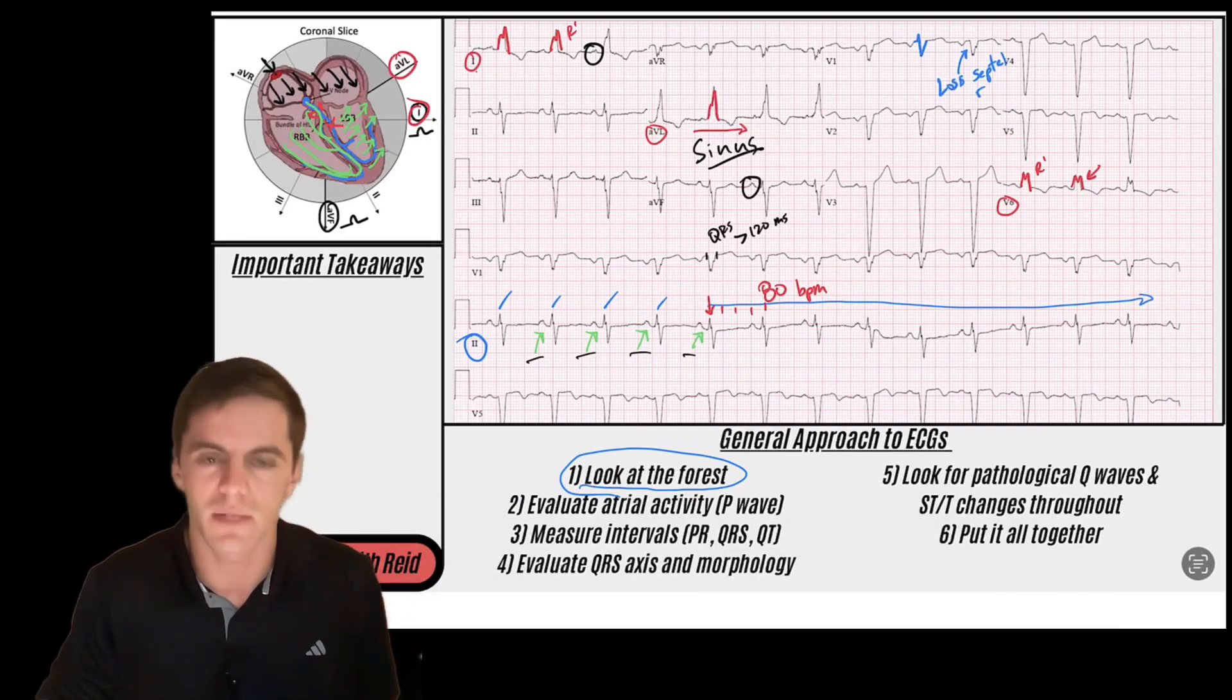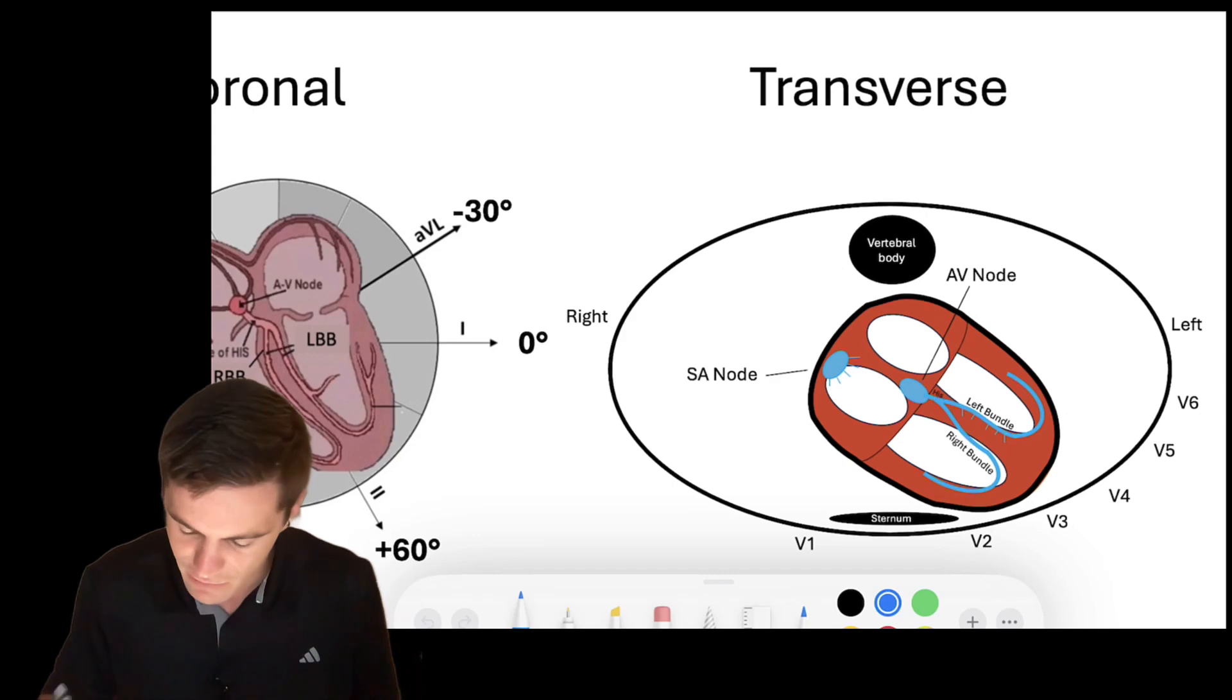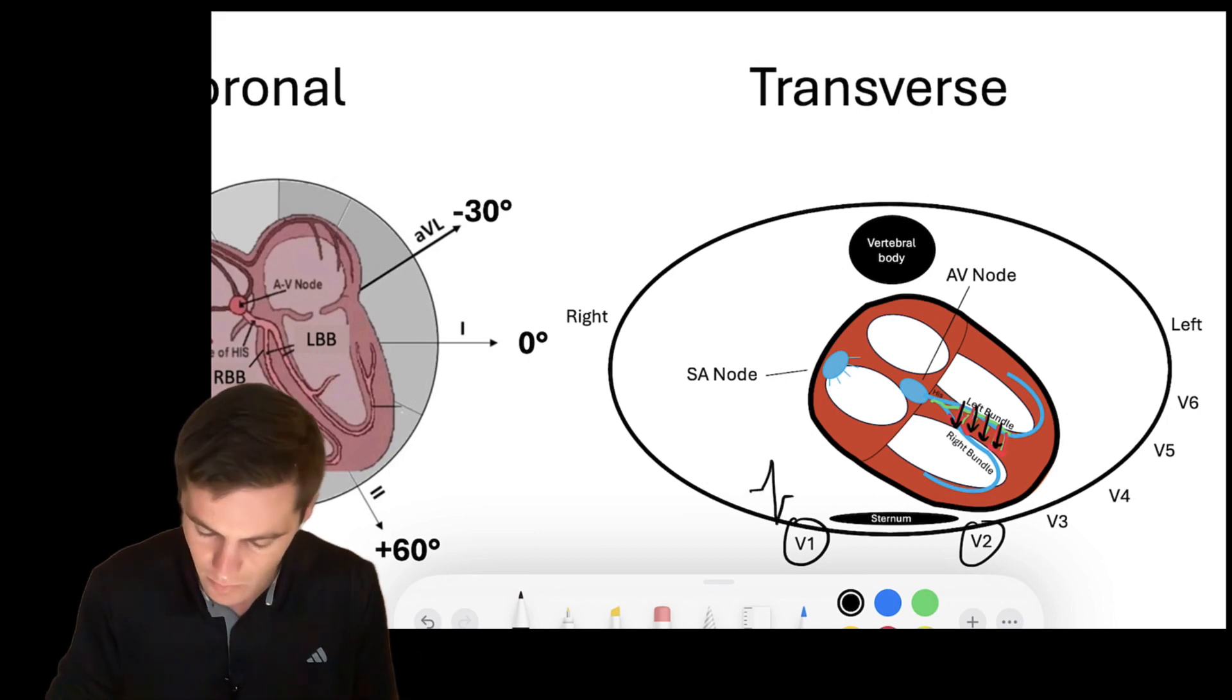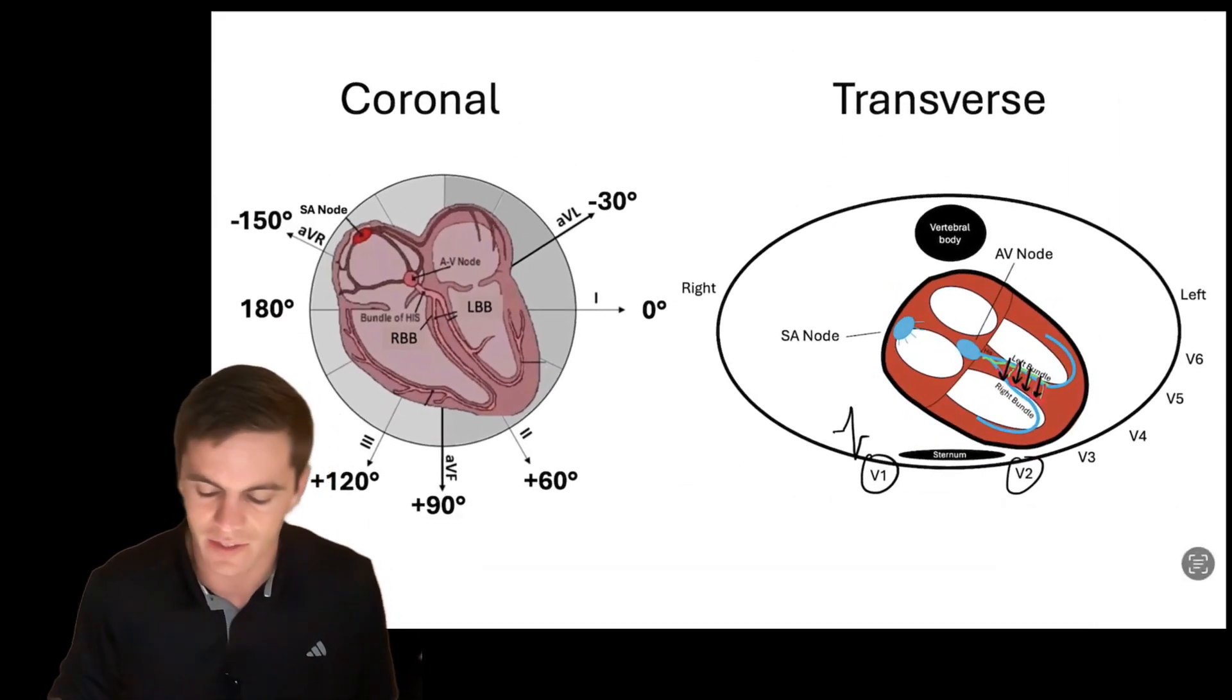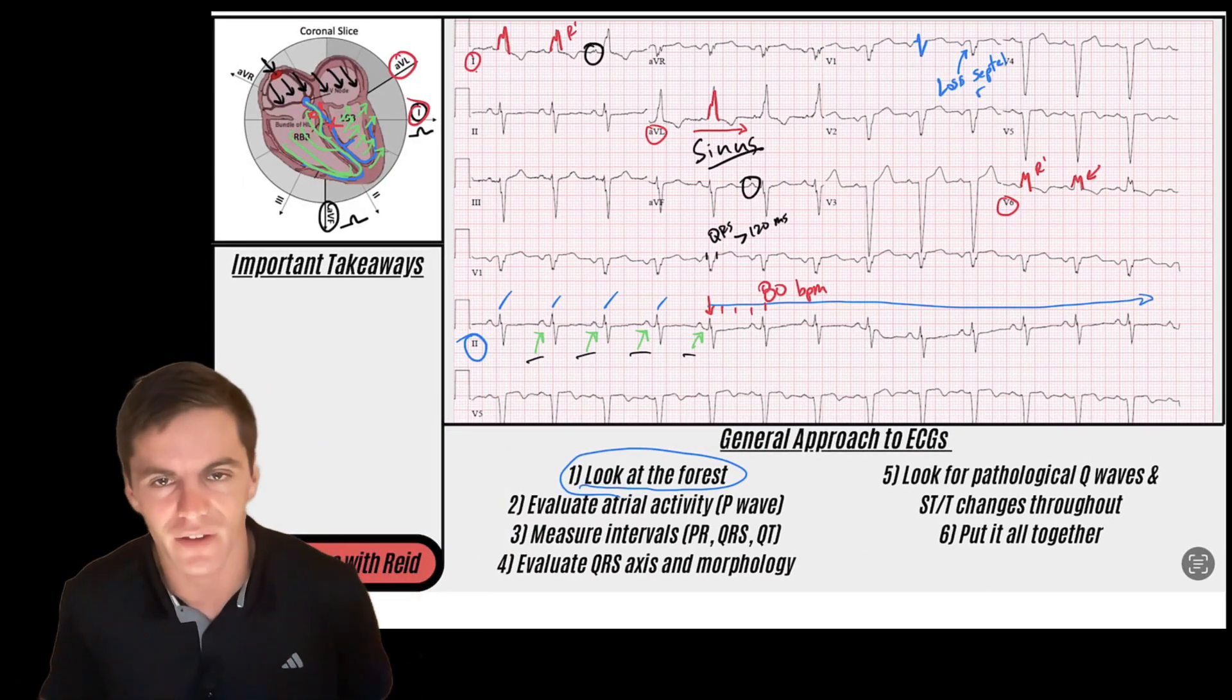And that's because the left bundle branch depolarizes the septum. So here's my transverse plane. And remember the left bundle that's sitting right here, when it sends that signal down, there's little septal perforator fibers here that depolarize the signal from the left side to the right side. And so that creates a small force of depolarization. Look at the direction of my arrows towards the septal leads. And so that's what causes that little septal R wave. We don't have that.